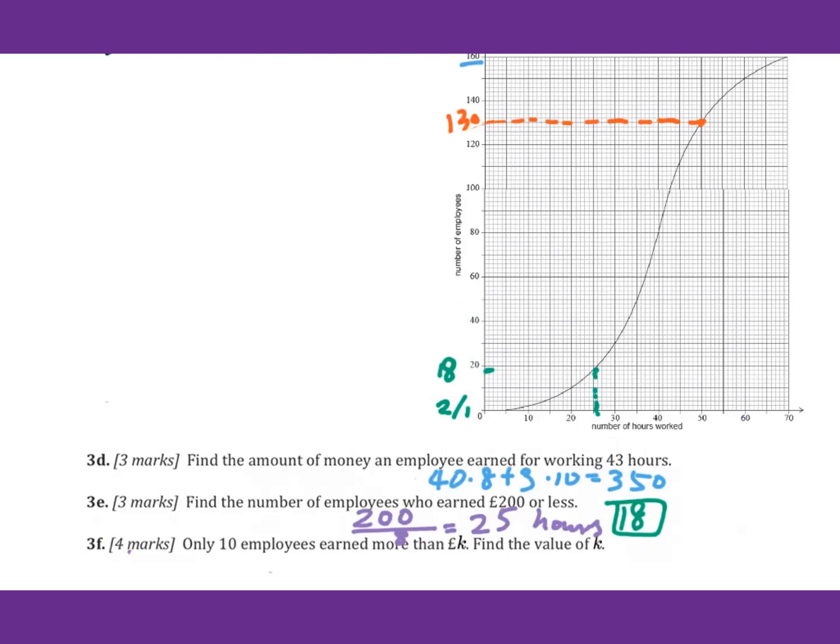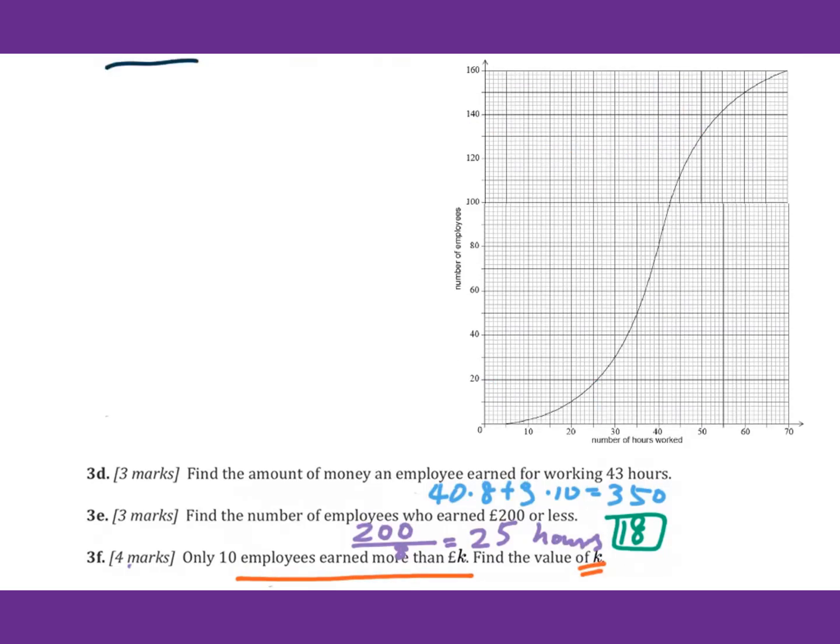Let's go to last question. Only 10 employees earned more than K pounds. Find the value of K. So you will find these 10 employees from here. This is 10 employees. So we go down to 60 hours. They have to work more than 60 hours. For 60 hours, 40 hours they paid 8 pounds for each hour. The rest of 20 they paid 10 pounds for each hour. So we got 320 plus 200, that's 520 pounds. This is the K.